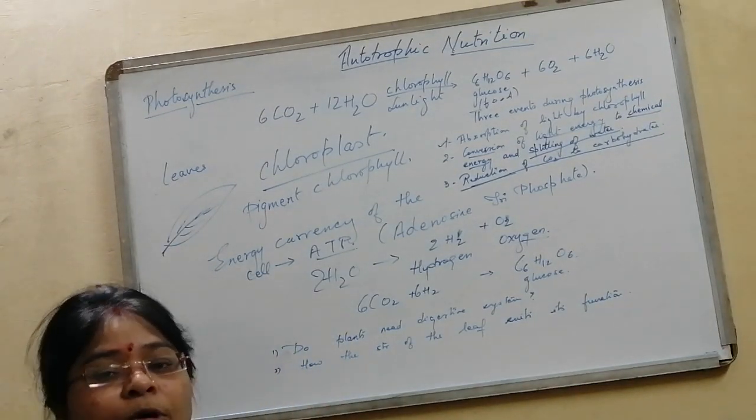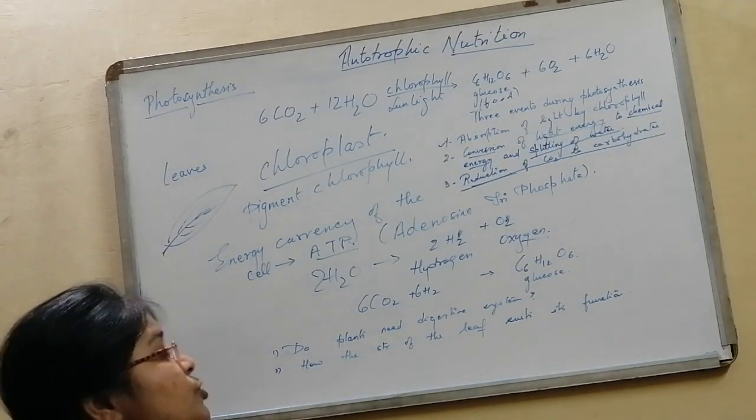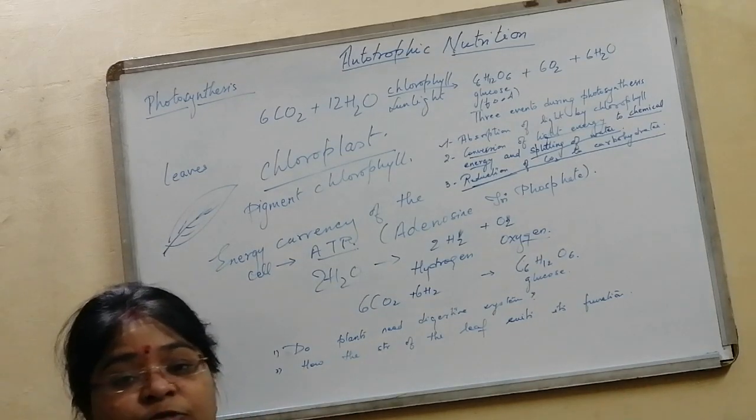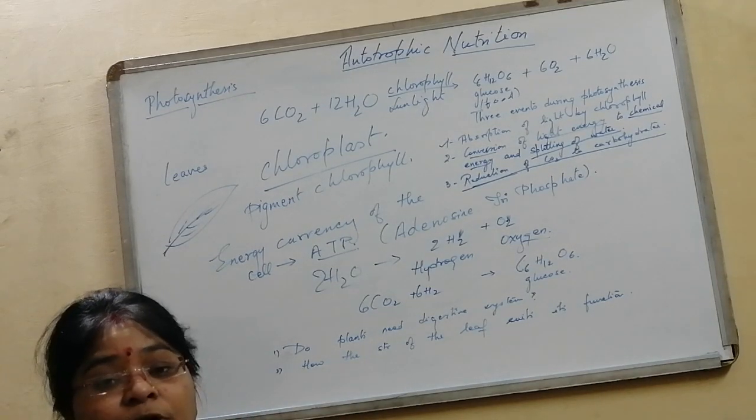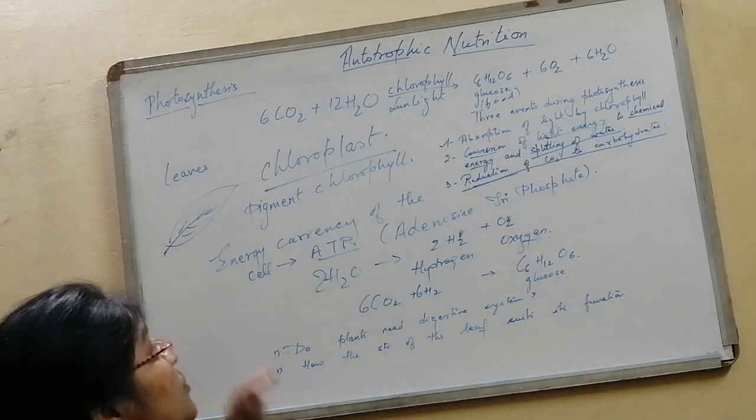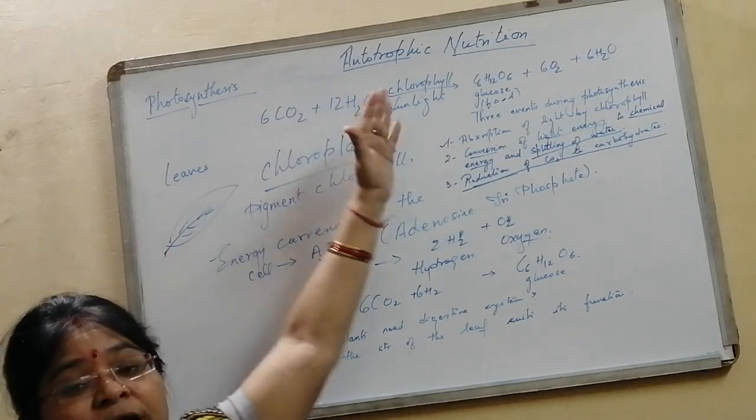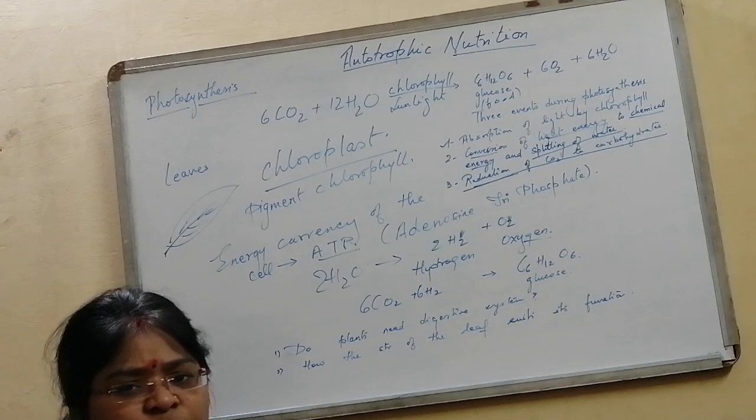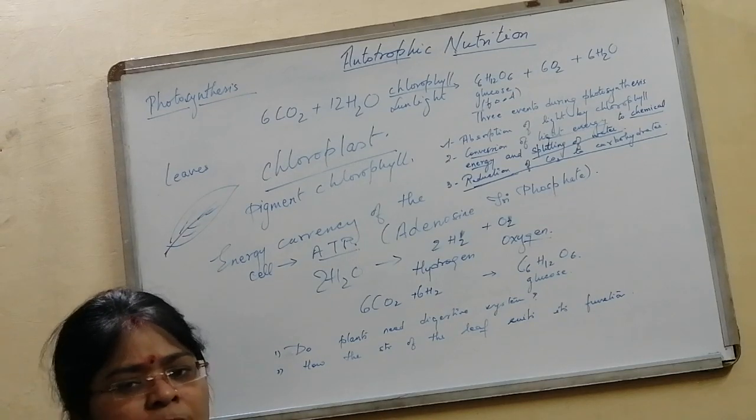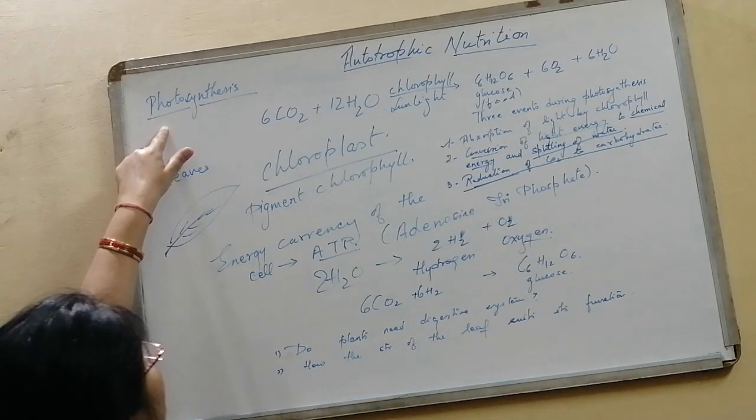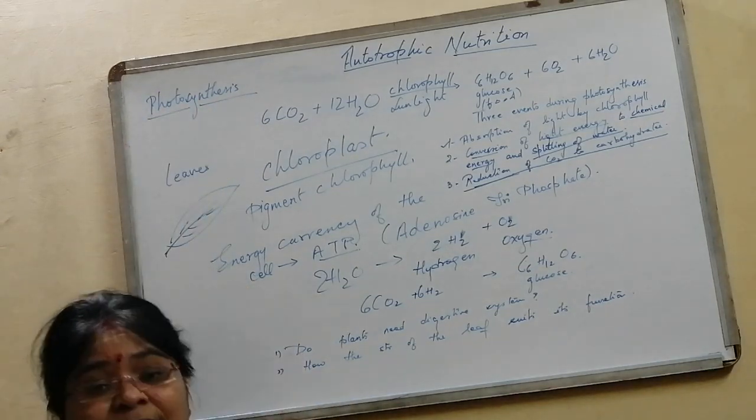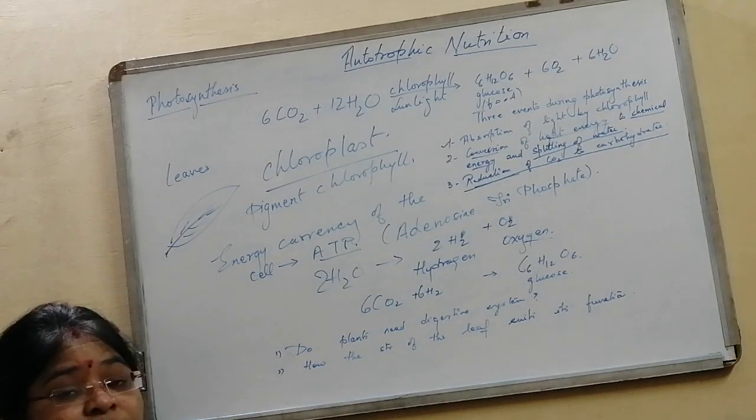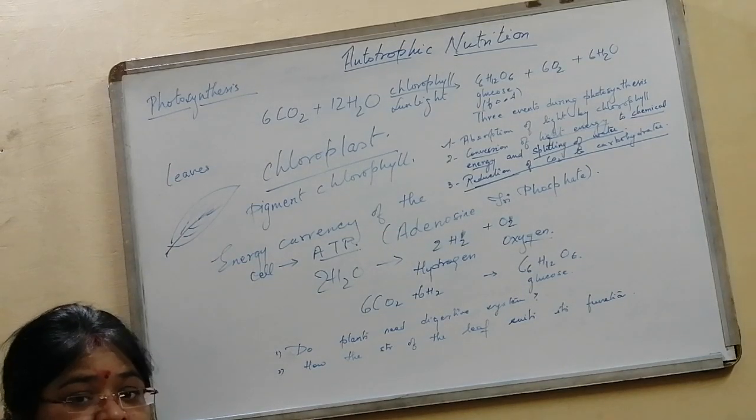Today I'm going to talk about autotrophic nutrition. Autotrophs are plants, and plants are able to make their own food by a process all of you are aware of - photosynthesis. What does this word photosynthesis mean? Photo is light, photon.